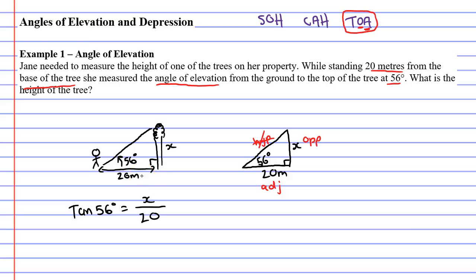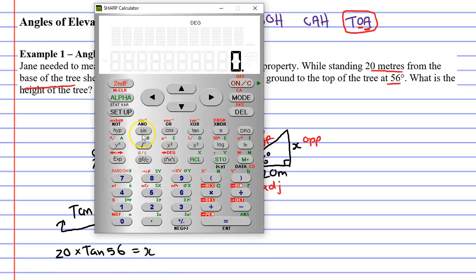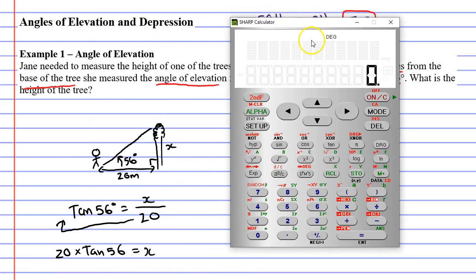Now if you have a number at the bottom or for the denominator, we do what's called a slide. We slide the 20 to the front of TAN 56. 20 times TAN 56 equals X. Alright we'll bring up our calculator now. Remembering to make sure that it says DEG or D for degrees at the top. Otherwise our solution will be wrong. And we just type it in 20 times TAN of 56 degrees.